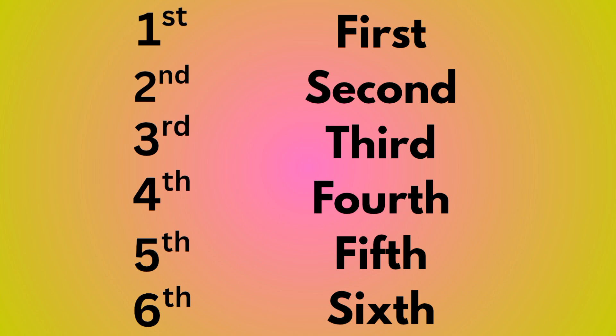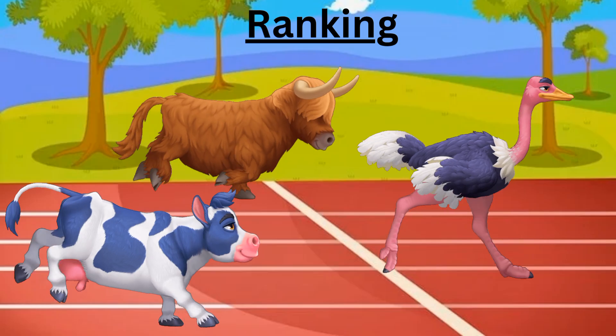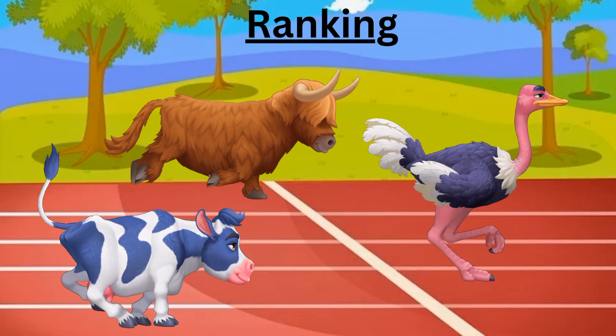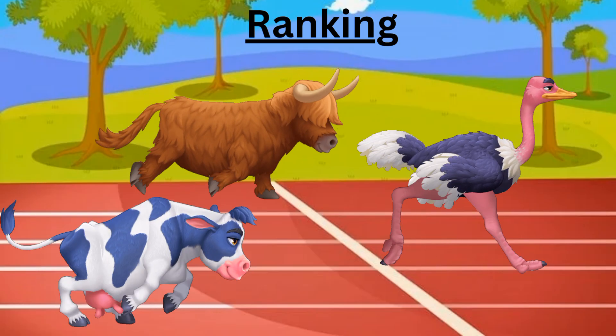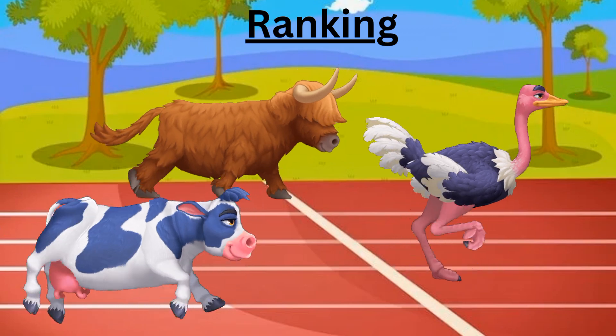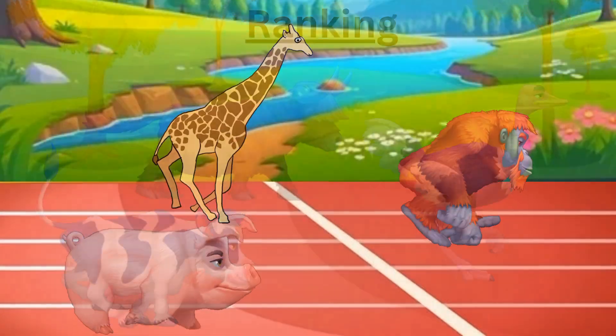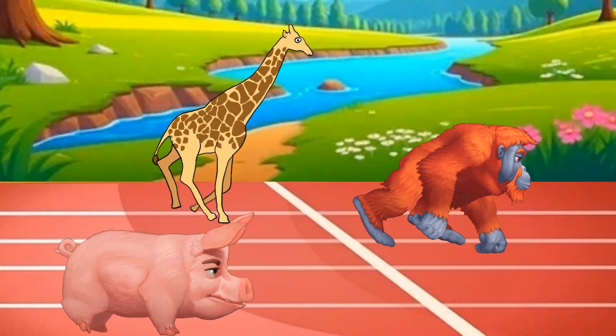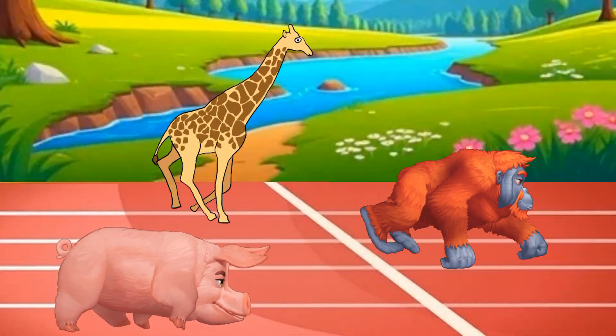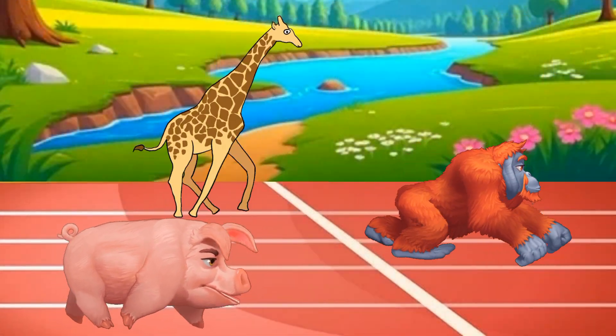Examples. Ordinal numbers are used to describe rankings in races. Shall we see one example video? Here, six animals are participating in a race.